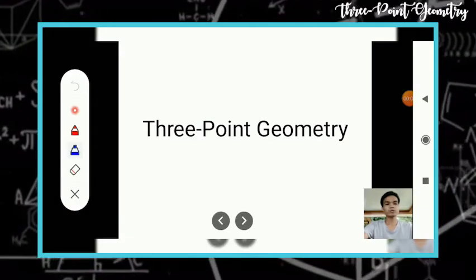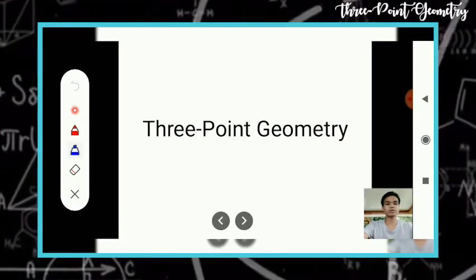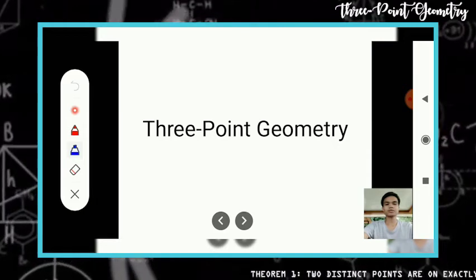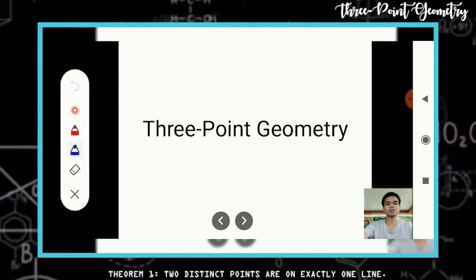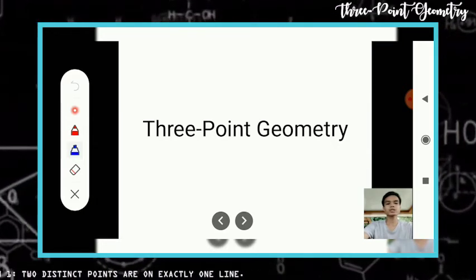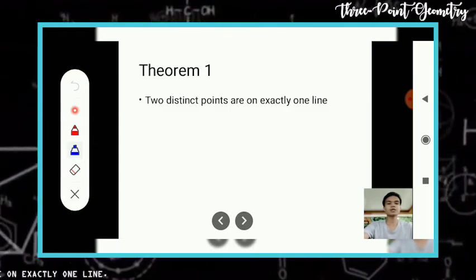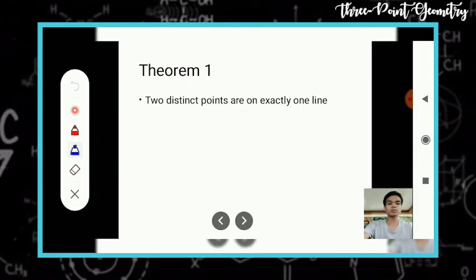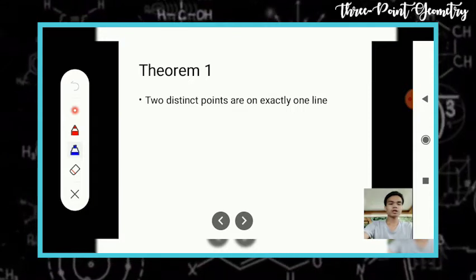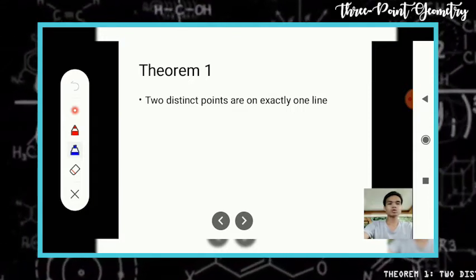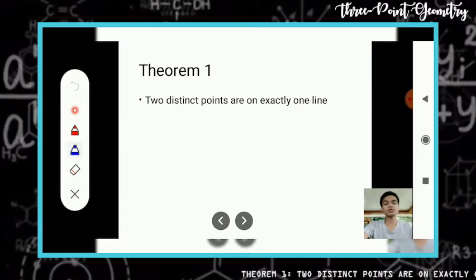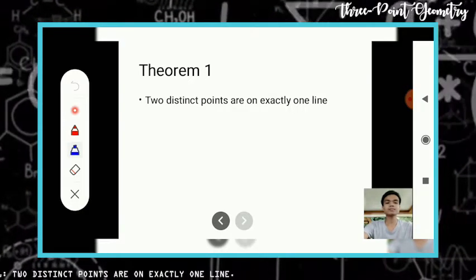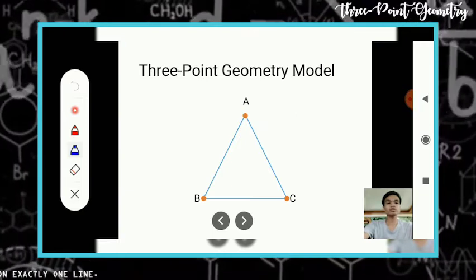In this moment, we are going to verify one of the theorems of three-point geometry, which is theorem one: two distinct points are on exactly one line. So to verify this theorem, we have this three-point geometry model.